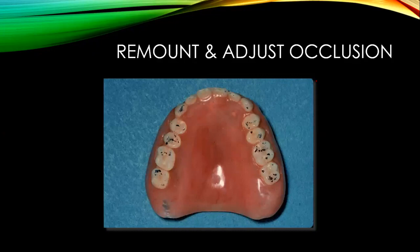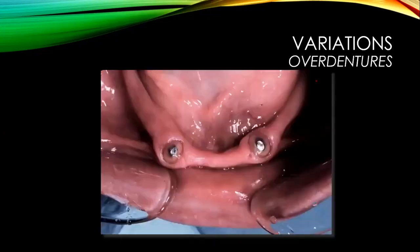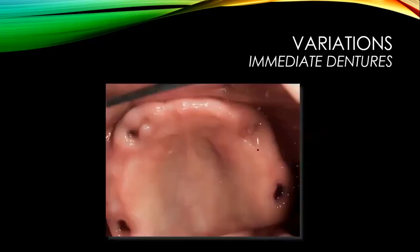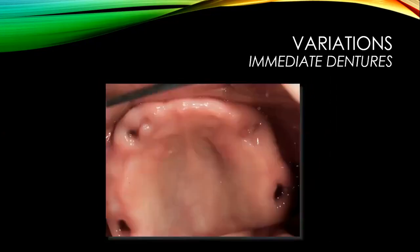There are variations of dentures used in prosthodontics. There are single dentures, where only a maxillary or mandibular complete denture is made. There are over-dentures — you can see the pins/attachments being used for these. And there are immediate dentures, placed right after tooth extraction. So the variations are: single complete dentures, over-dentures, and immediate dentures.